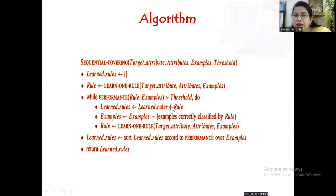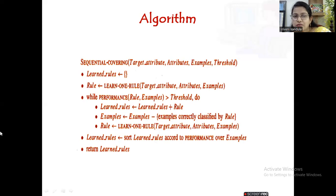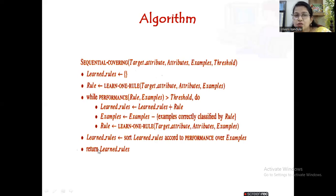The acceptable rule is added to the set of learned rules, which is initially empty. Then the examples classified by that rule are eliminated — for instance, out of 13 examples, if three were classified, 10 remain. On those remaining examples we invoke learn one rule again to learn a second rule. All the learned rules are finally sorted by performance: if rule one classifies three examples and rule three classifies six, rule three comes first, followed by rule one. Finally, the sorted learned rules are returned.